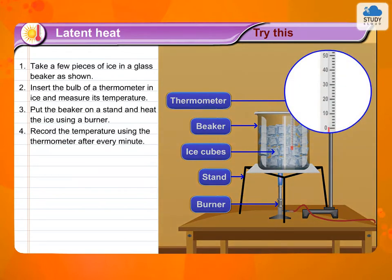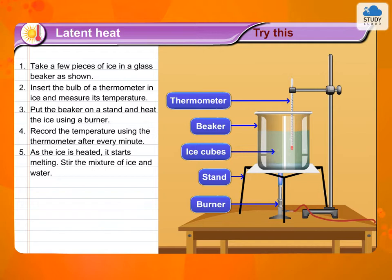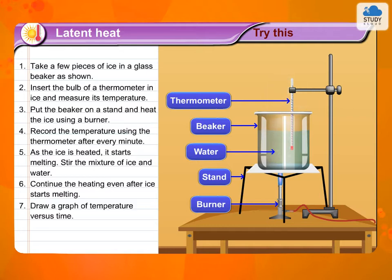Record the temperature using the thermometer after every minute. As the ice is heated, it starts melting. Stir the mixture of ice and water. Continue the heating even after ice starts melting. Draw a graph of temperature versus time.